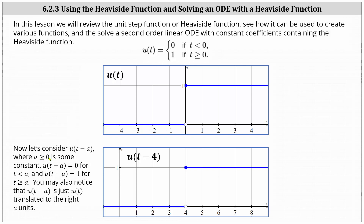where a greater than or equal to zero is some constant, u(t − a) equals zero for t less than a. You may also notice that u(t − a) is just u(t) shifted or translated to the right by a units. As an example, we have the graph of u(t − 4), where the function value is zero when t is less than four, and one when t is greater than or equal to four.